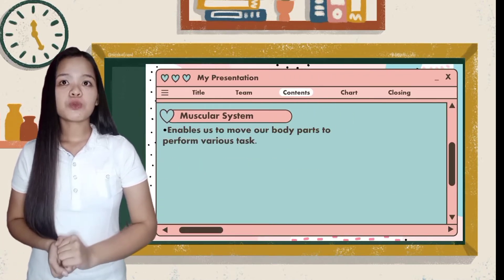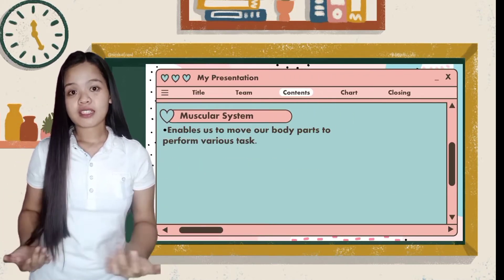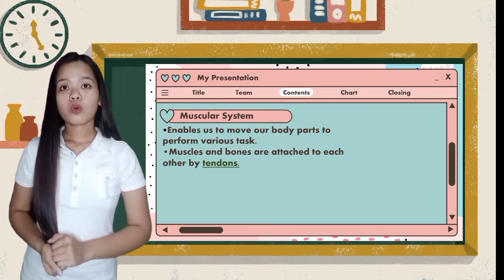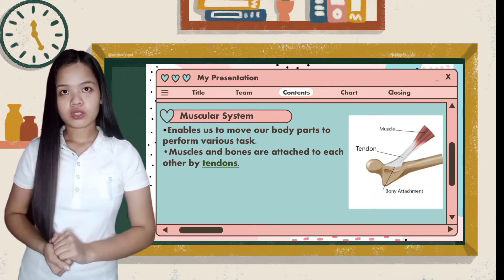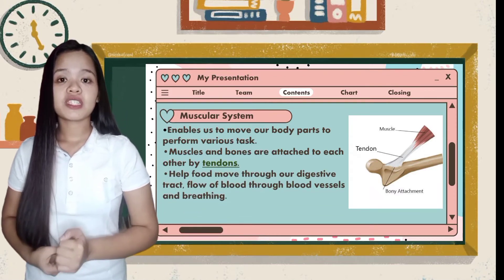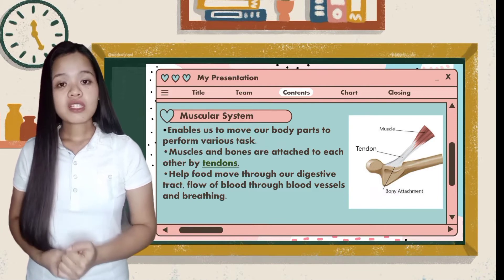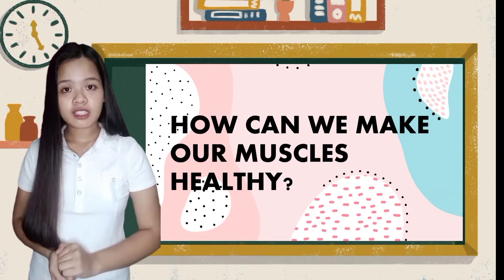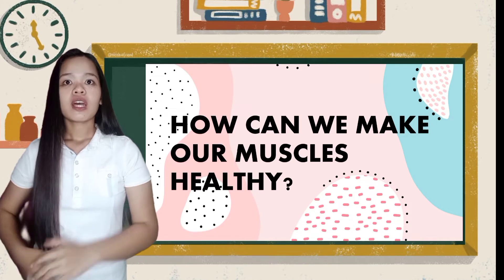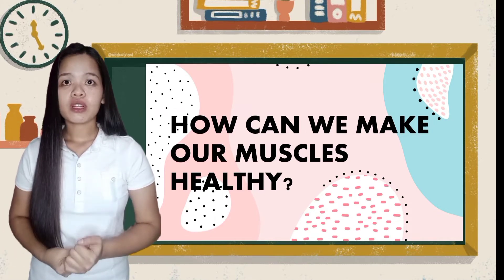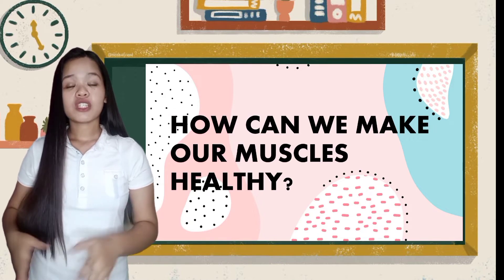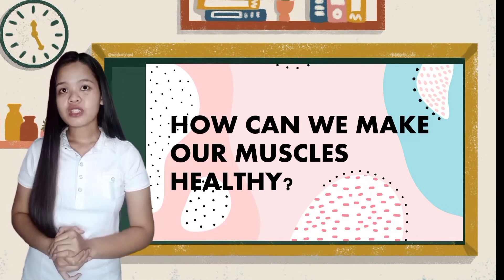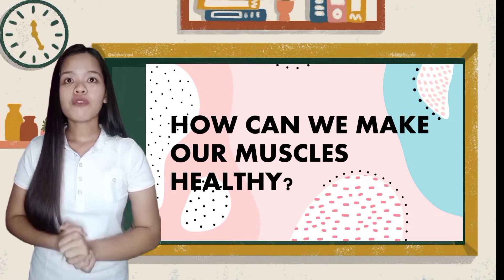The muscular system enables us to move our body parts to perform various tasks. Muscles vary in length, size, shape, and thickness. Muscles and bones are attached to each other by tendons. Muscles help food move through our digestive tract, flow blood through blood vessels, and aid in breathing. Our muscles need regular exercise and a healthy diet rich in minerals and proteins, and we should avoid overstressing our muscles.